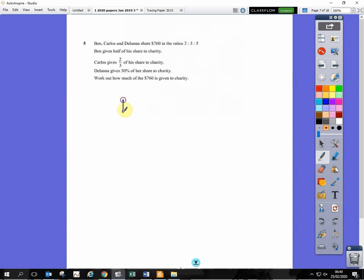This question. So we have Ben, Carlos, and Delana. So they share the ratios. The money is divided in the ratio 2 to 3 to 5. So it's shared between all of them. So we can add these parts together, get 10 parts. 760 divided by 10 gives us 76. That's worth one part, one ratio, one share, however you want to describe it. And then Ben gets 2 parts, Carlos gets 3 parts, and Delana gets 5 parts. So we have 2 times 76, 3 times 76, and 5 times 76. It gives us 152, 228, 380.